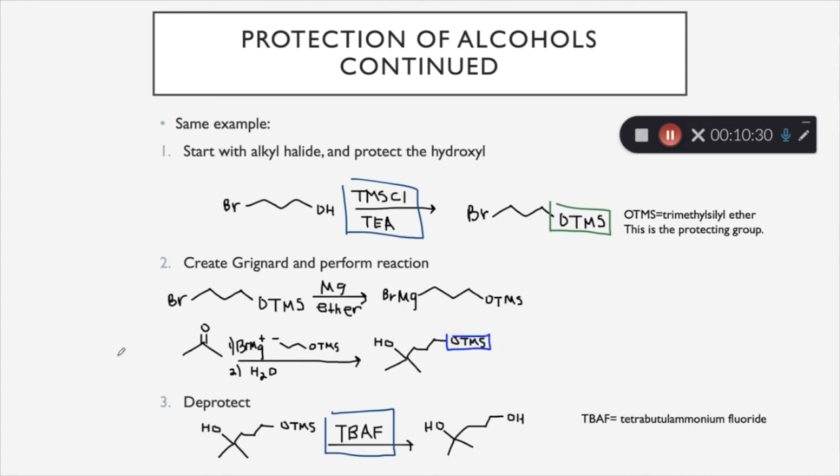So the last step is to deprotect. And in this case, we're going to use something called TBAF. And TBAF is going to take this protecting group and turn it back into a hydroxide. So that was a lot of steps. But the main idea is that hydroxyls cannot be a part of a Grignard. So really, you just have to turn that hydroxyl into something else, make your Grignard, use it, and then you can take off that something else and turn it back into a hydroxyl. And this is going to be the way that we can add an R group with a hydroxyl group on it.